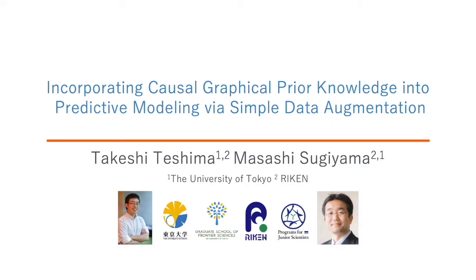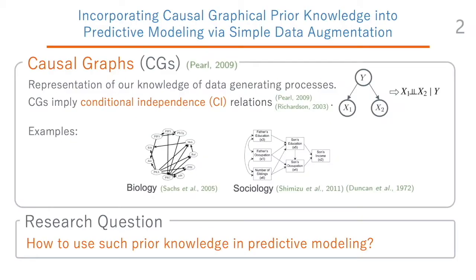This is the presentation for incorporating causal graphical prior knowledge into predictive modeling via simple data augmentation, presented by Takeshi Tashima and Masashi Sugiyama. In this work, we propose a general data augmentation method to incorporate the prior knowledge of causal graphs into predictive modeling.